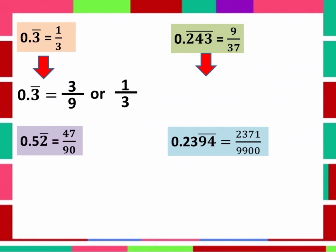Another one, 0.243 with a bar. How many numbers repeats? Yes, 3. And that number is 2, 4, 3. So we put 3, 9 in the denominator. Because, as I said, the number of digits that is repeat is equal to the number of 9 in the denominator. So we put 999 in here.